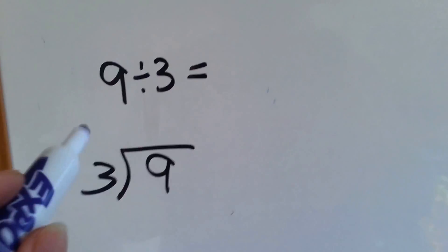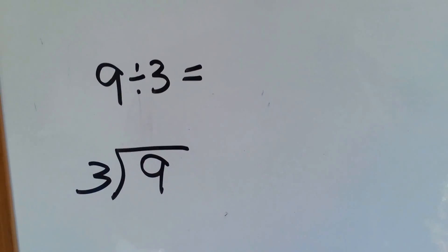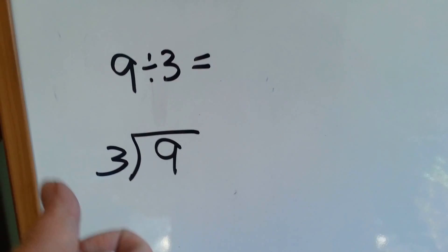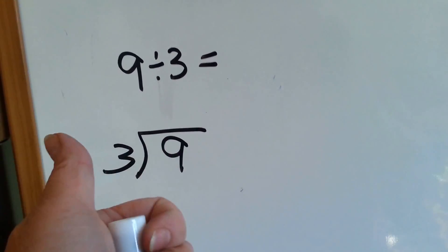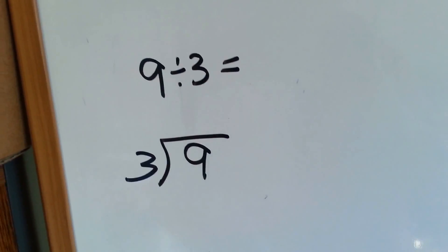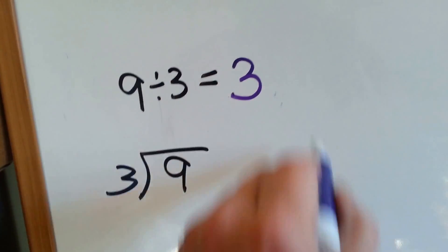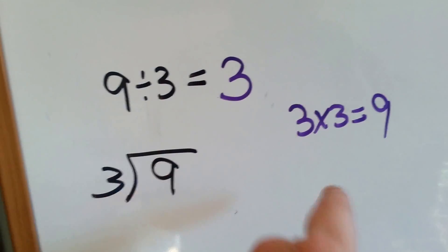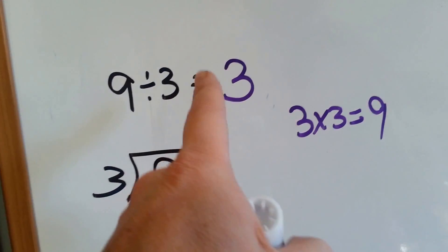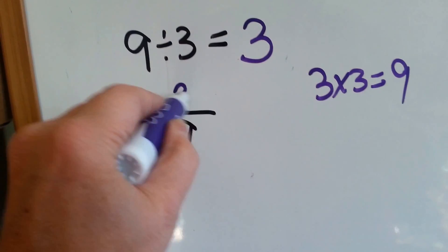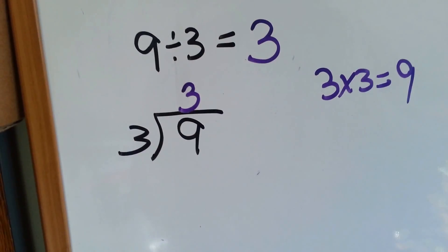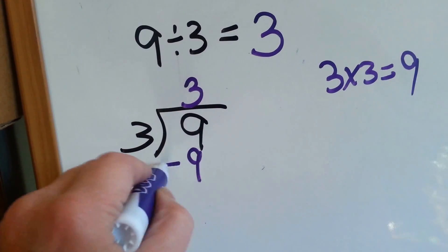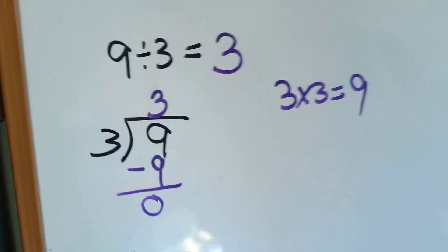How about this one? 9 divided by 3. Let's count by 3's and see how many times we use our fingers: 3, 6, 9. Three of them. 3 times 3 equals 9, so I know we're correct — that's the inverse operation. 3 goes into 9 three times. 3 times 3 is 9. We do our subtraction and we get 0.